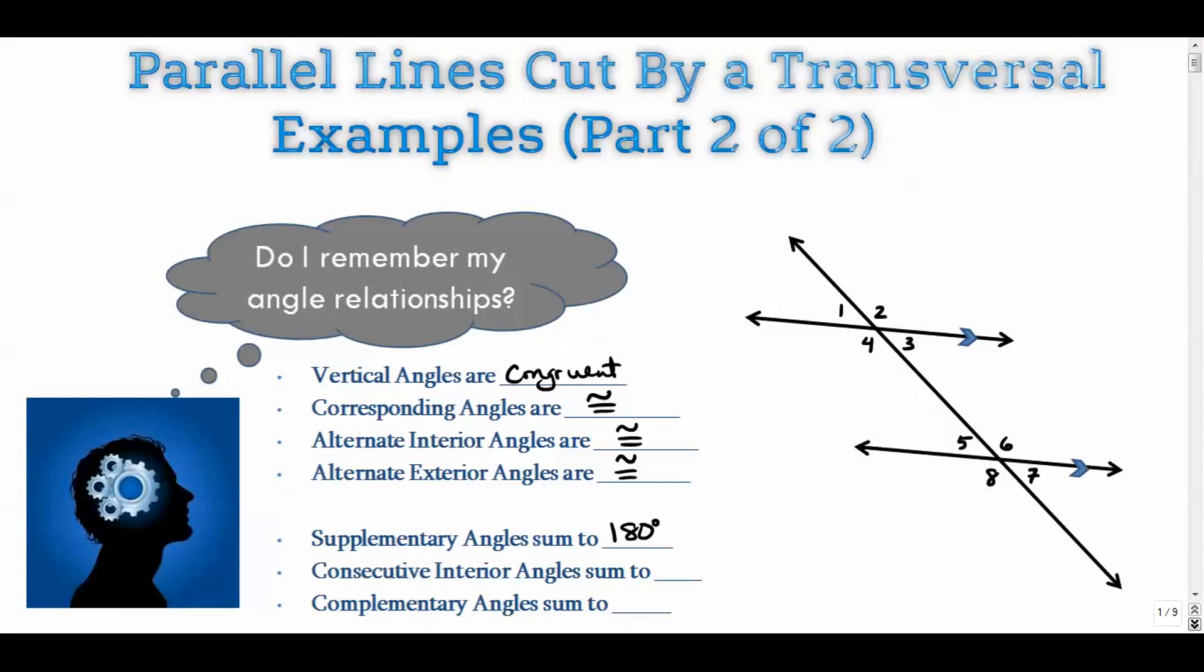Consecutive interior angles. Consecutive interior angles are four and five. They are on the same side of our transversal, and they're both on the interior. Three and six are also consecutive interior. They add up to 180.